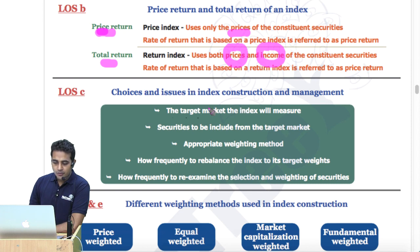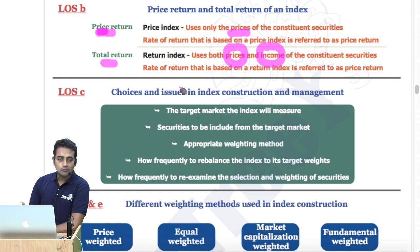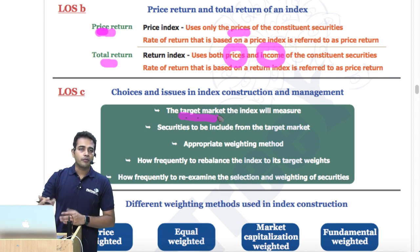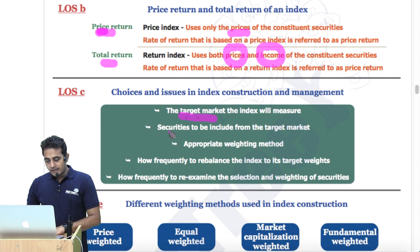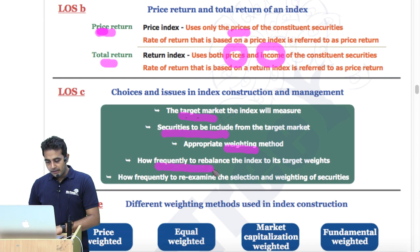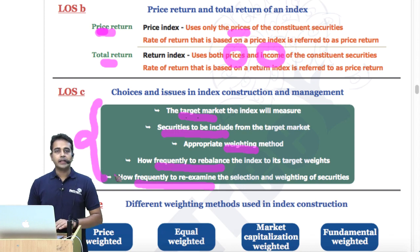Choices and issues in index construction and management. If you are creating an index, the choices you need to make are: number one, what target market; which securities to include; what weights to use — equal weights or price weighted; how frequently to rebalance; and how frequently to re-examine. These are the five decisions you need to take as an index provider.